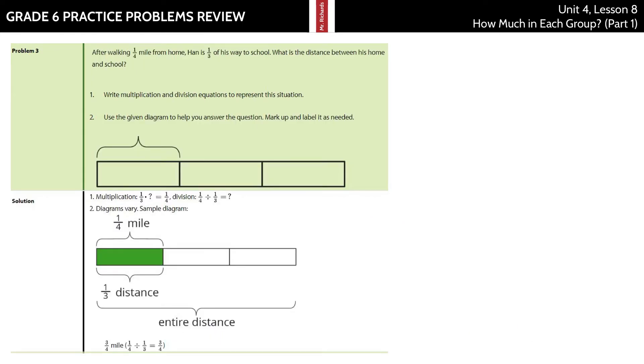In our third question, after walking one-fourth mile from home, Han is one-third of his way to school. What is the distance between his home and school? Write multiplication and division equations. And use the given diagram to help you answer the question, mark up and label as needed. I'm actually going to redraw it out here again because I need a little bit more space. So this is what we were given.